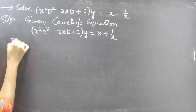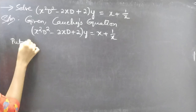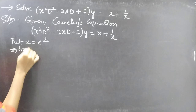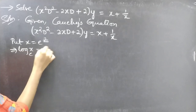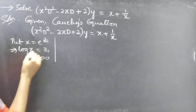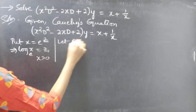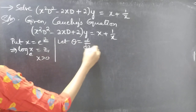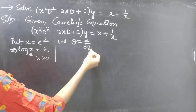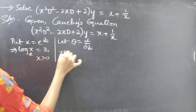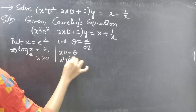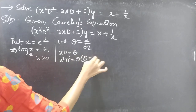Now let's make the substitution. Put x equals e to the power z, so that log x to the base e equals z for x greater than 0. Let theta equals d by dz, where theta is a differential operator with independent variable z. Then xD equals theta, and x squared D squared equals theta times theta minus 1.